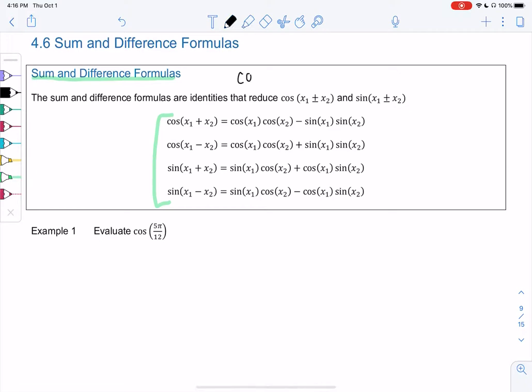But the idea is if you have cosine of pi over 2 plus pi over 3, it might be tempting to say cosine of pi over 2 plus cosine of pi over 3, but it doesn't work like that. So we have to use these identities instead.